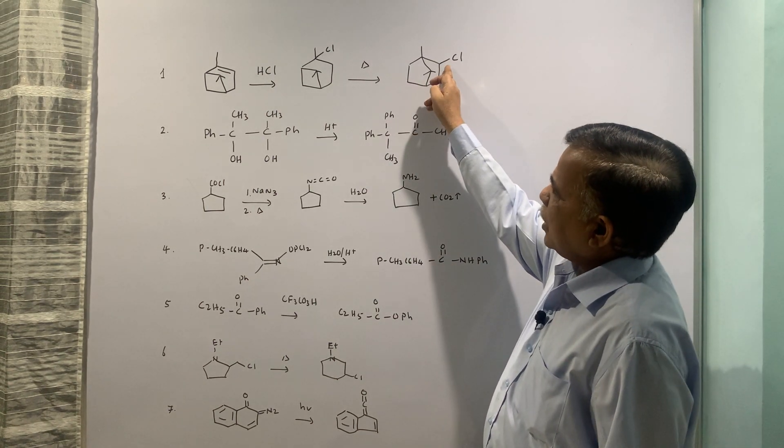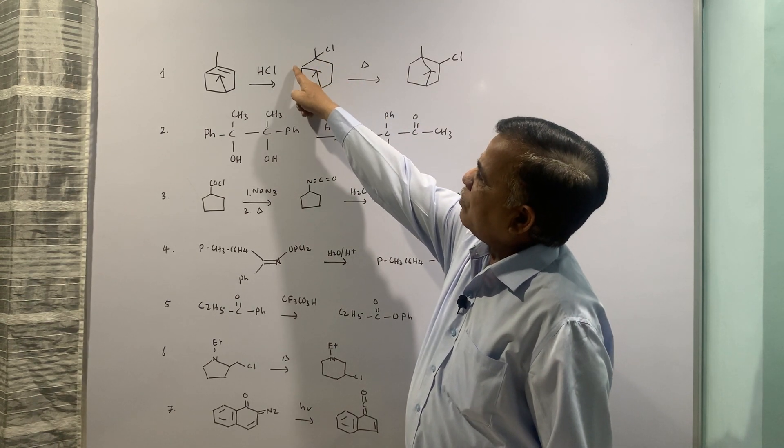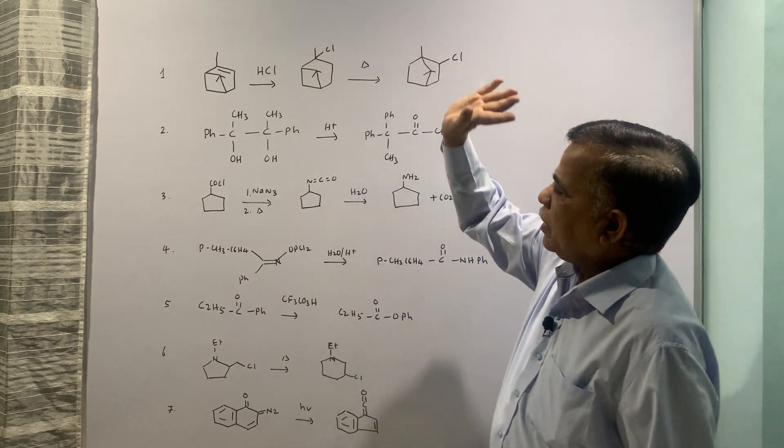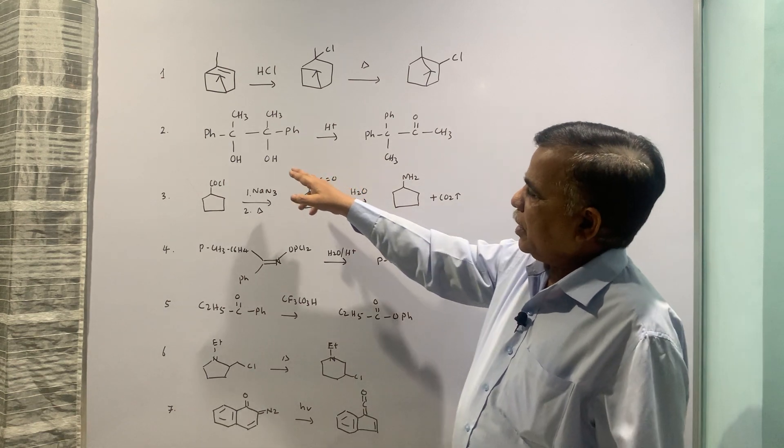This ring expands and this pinene becomes bornyl chloride. The positive charge will be here. Once this goes off and this comes here, positive charge will be here and that is being attacked by Cl. We will write down these steps immediately after this.